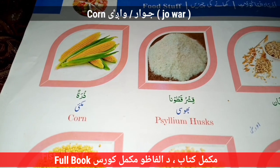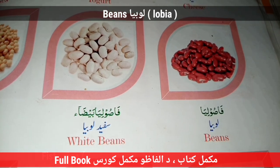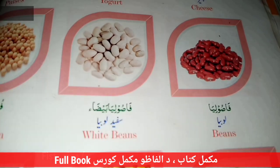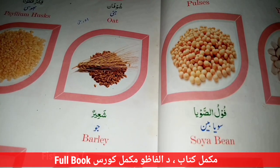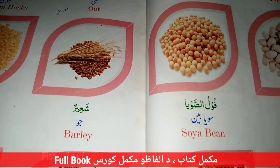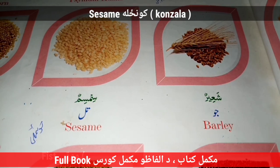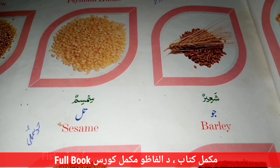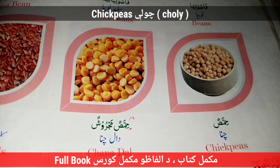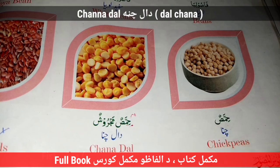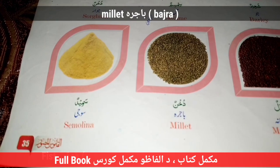Beans — Lobya. Korha — Ya Kalul. White Beans — Spin Lobya. Soya Bean. Barley. Sesame — Kunzala. Sesame Oil Ki. Chickpeas — Chana — Ya Choli. Chana Daal — Da Chano Daal. Millet — Bajra.